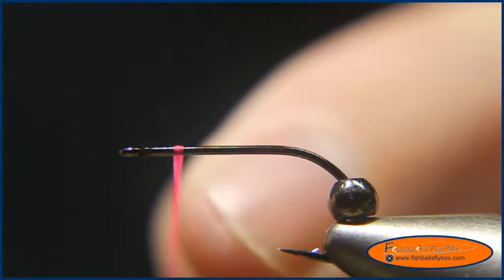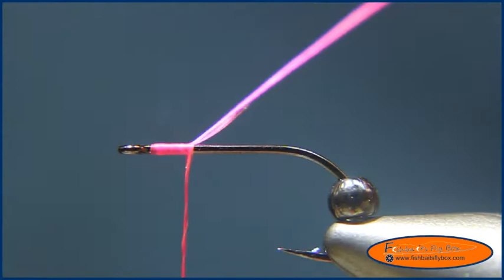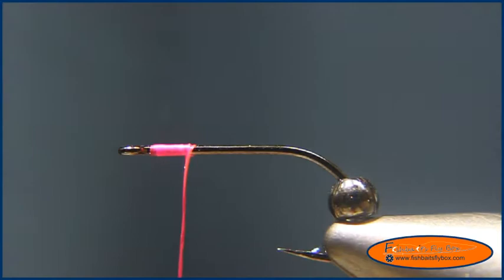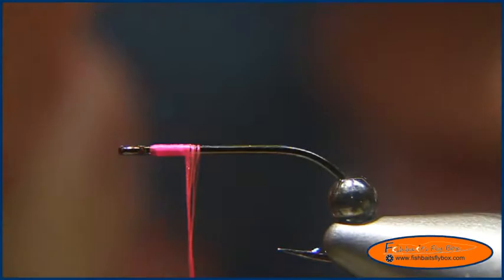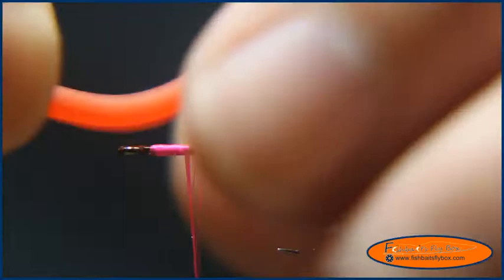I'm going to push the bead back to the back of the fly and I'm going to take and wrap a few wraps of this fluorescent pink UTC 140 thread. And now I'm going to take a piece of squirmy material. This is kind of a squirmy wormy and you can do it with chenille too. But I'm going to take a piece of squirmy material and we're going to go ahead and tie that in.